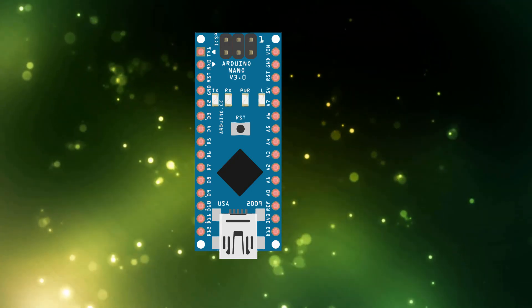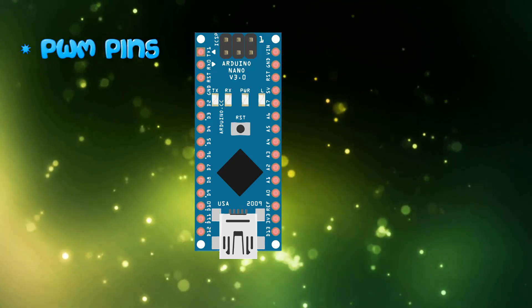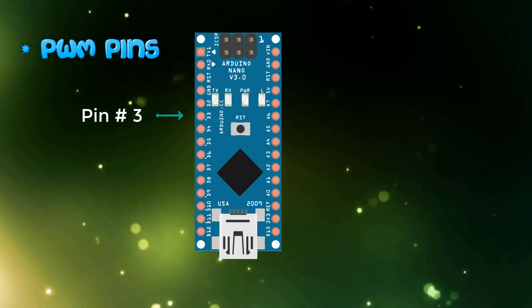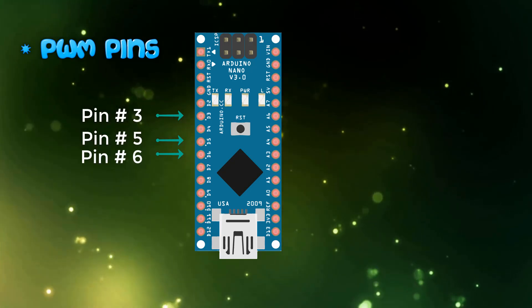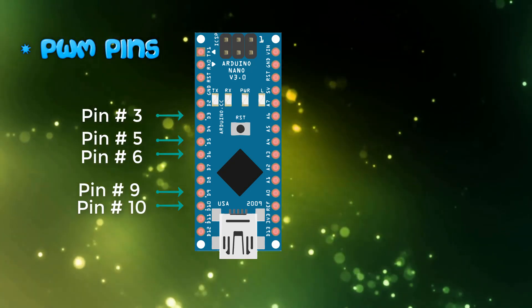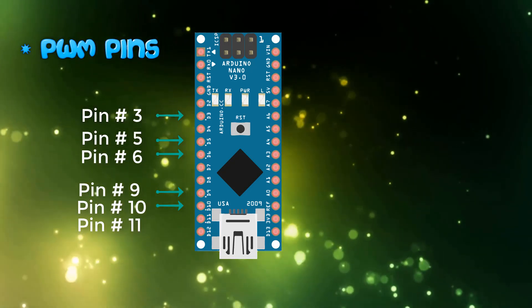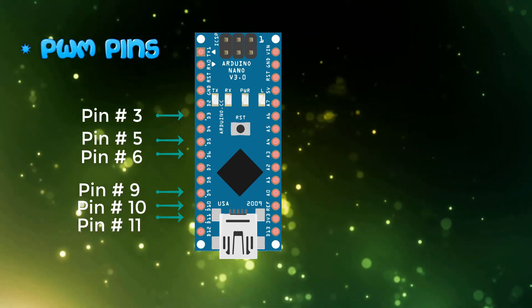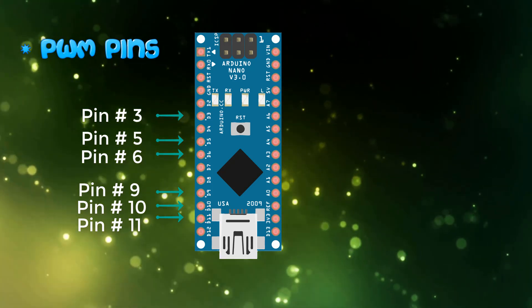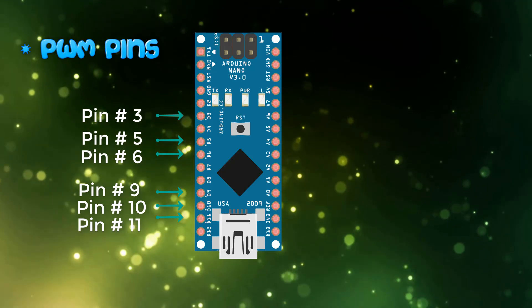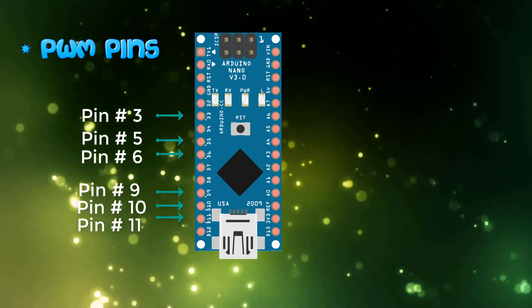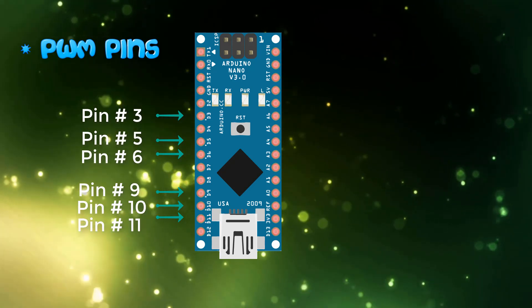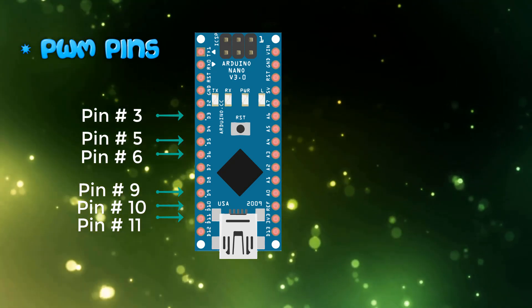Arduino Nano also has six PWM pins which are pin number 3, 5, 6, 9, 10, and 11. These six pins can be used for pulse width modulation. So if you are working on some project where you have to control the speed of your DC motor, then you can use any of these PWM pins.